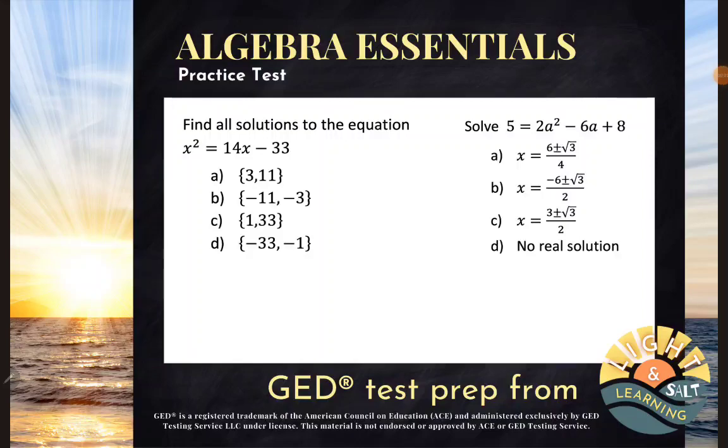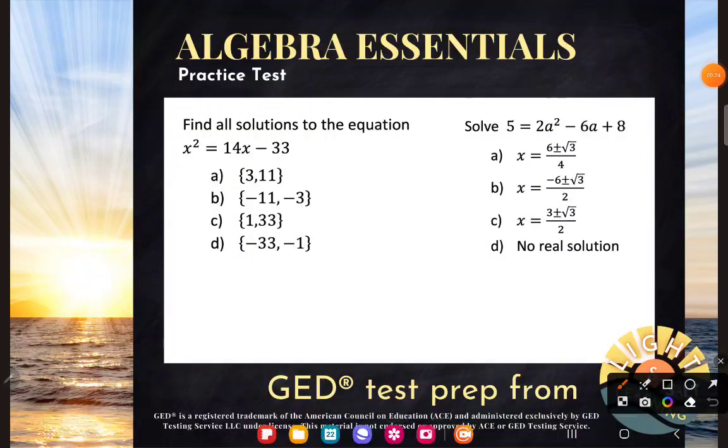Hello, algebra students. Bust out your formula sheet and your GED calculator if you don't already have it. Pause me, I'll wait as long as you need. So first example, find all solutions to the equation x squared is equal to 14x minus 33.